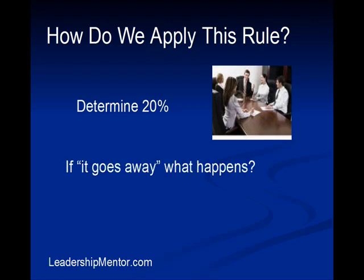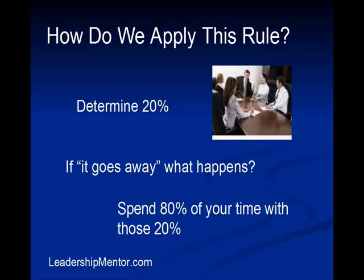One way we can identify the top 20%, especially if it's not pertaining to people but more of a task, is to ask ourselves: if this task was to go away, what would happen? By asking that question, a lot of times that's going to tell us whether it falls into the top 20% or not. And once we've done that, we simply spend 80% of our time with those 20%.